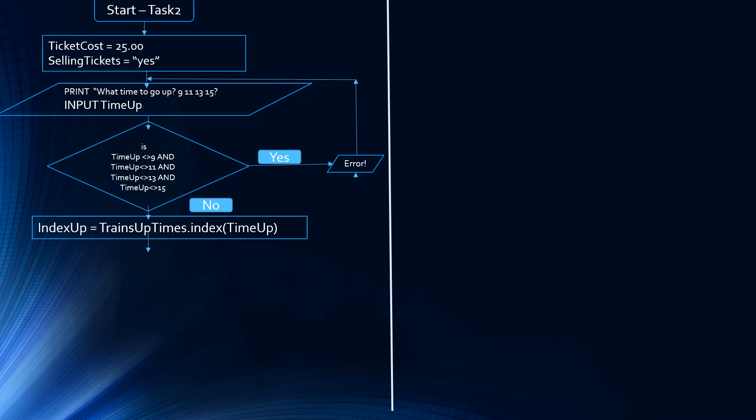Now we're going to put the flowchart symbols for inputting time up and validating time up. So we're going to print a message: what time do you want to go up? 9 o'clock, 11 o'clock, 13 o'clock, or 15 o'clock? And input the time. Then we have a decision box for validation: is time up not equal to 9 and not equal to 11 and not equal to 13 and not equal to 15?